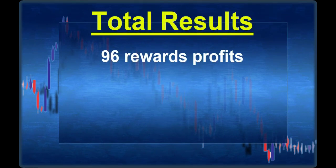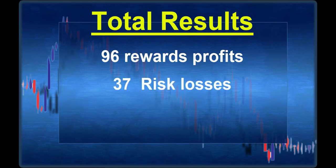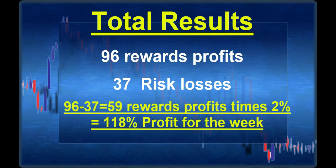So the total results: we have 96 reward profits against 37 risk losses. That makes a profit for the week of 59 reward. Using two percent risk per trade, that's 118 percent profit using this profile and the four-hour swing trading strategy I've given you for free on this YouTube channel. This is for only seven days of trading - 118 percent profit in seven days. From now on, until an undefined date, you have access to my analysis and the alert channel for free on Telegram. The links are below - just click and join our group. I wish you success in trading, see you next week!